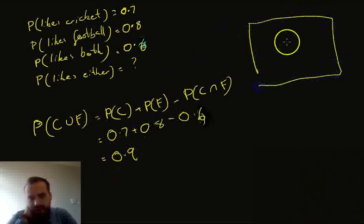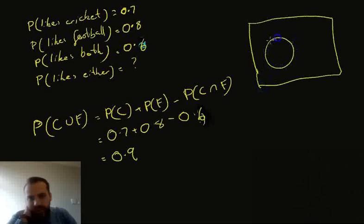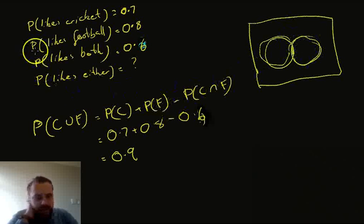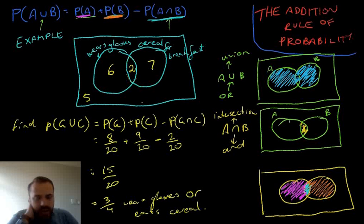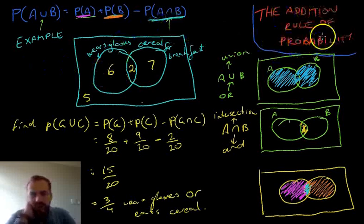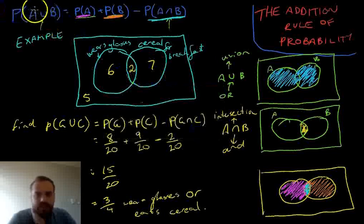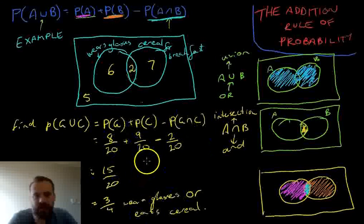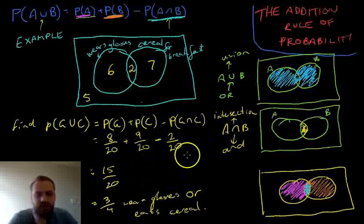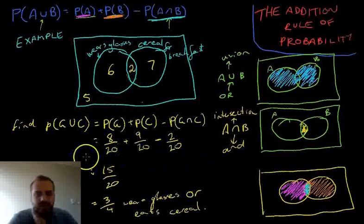And we can show all that on a Venn diagram fairly easily. The like cricket is here, the like football is here, liking both is there, and liking either is that bit there. So this was the addition rule of probability. What you need is this formula here, and to understand what a union and an intersection is, and how to find those. After this, it's really about you guys practicing, practicing, practicing, and seeing how you can go with it. Alright, thanks guys.